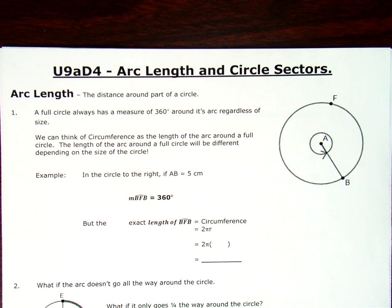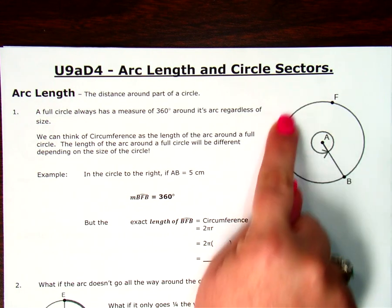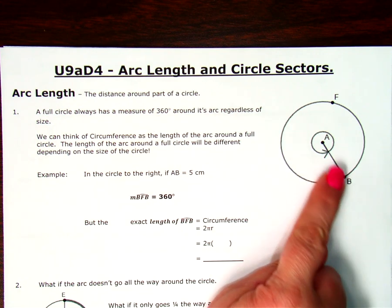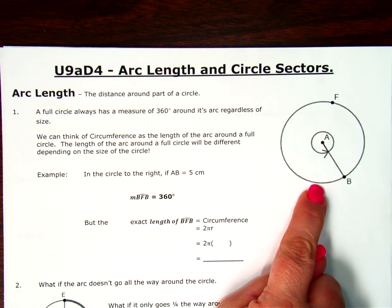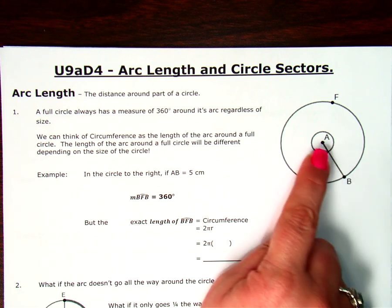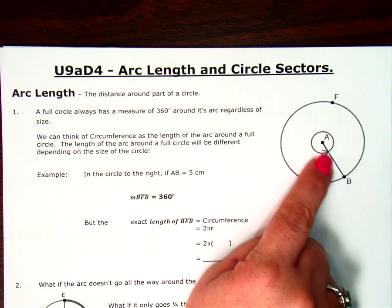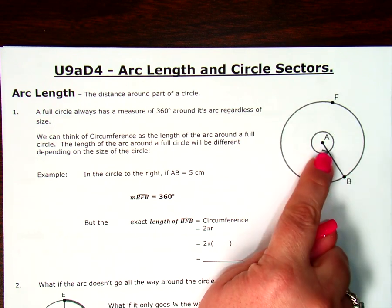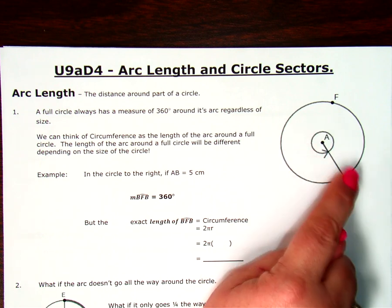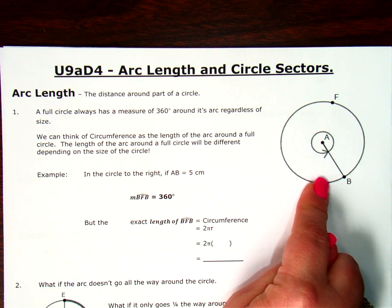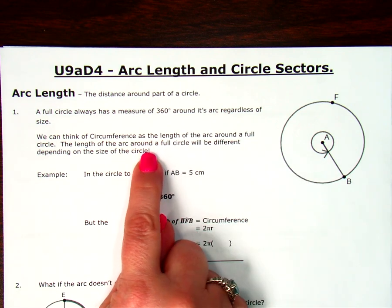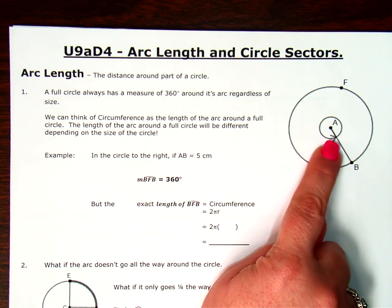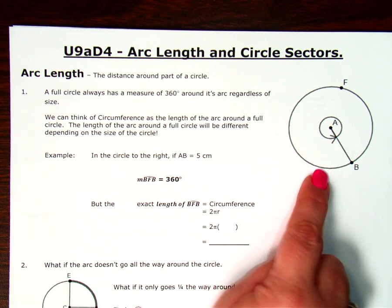Your arc length is the distance around part of a circle — how far around the circle are we going? We know a full circle always has a measure of 360 degrees regardless of size. So this little tiny circle and this big circle both measure 360 degrees, but because they have different radii, these two circles have different lengths or circumferences. Even though they both measure 360 degrees, the arc lengths are going to be different.